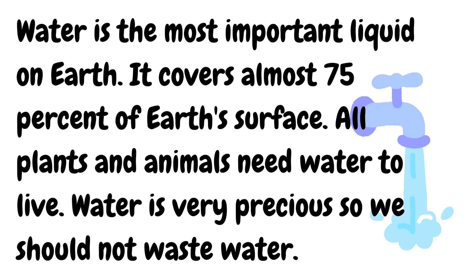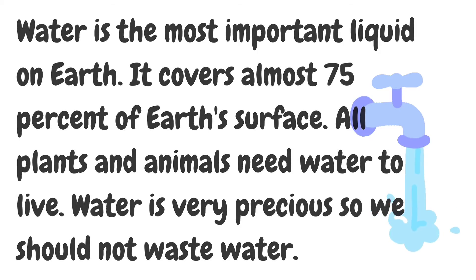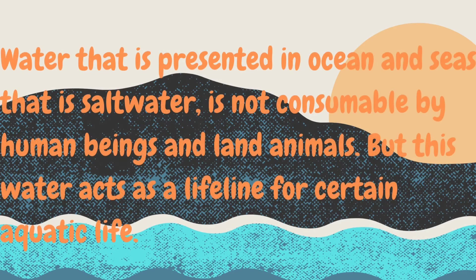Water is the most important liquid on Earth. It covers almost 75% of Earth's surface and all plants and animals need water to live. Water is very precious so we should not waste it. Water present in oceans and seas is not consumable by human beings and land animals, but this water acts as a lifeline for certain aquatic life.